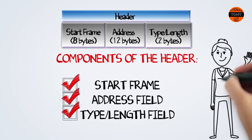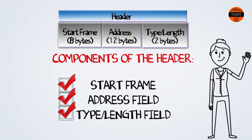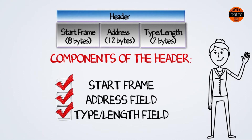Let's take a closer look at the header. The header contains information that is specific to the type of network card and protocol being used. The header begins with a start frame, which signals the receiving device that the frame is on its way. The second component is the address field, which contains the destination and source address of the frame. The type length field is used to describe what kind of data is being sent or the length of the frame.